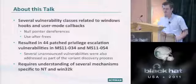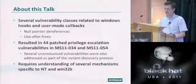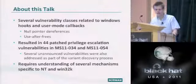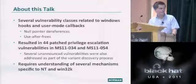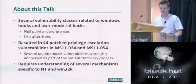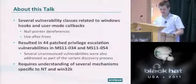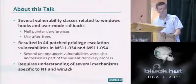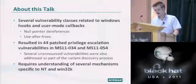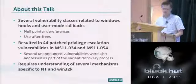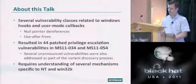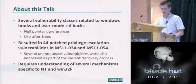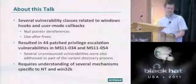This talk is about several vulnerability classes in Windows related to Windows Hooks and user mode callbacks. These eventually result in several unique classes like null pointer dereferences and use-after-free. They resulted in 44 patched privilege escalation vulnerabilities in MS11-034 back in April and MS11-054 last month, along with several unannounced vulnerabilities that were also patched as part of the variant discovery process. To understand these bugs, we need to go into mechanisms specific to the Windows NT kernel and Win32K.